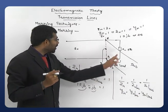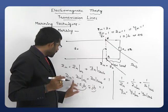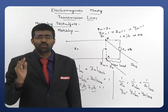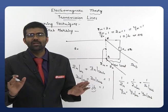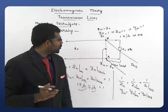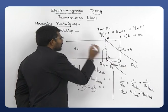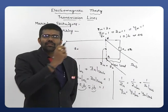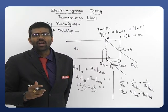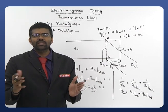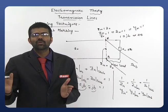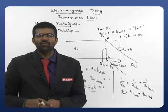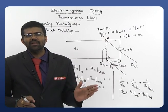However, this single-stub solution depends on the particular load ZL. If the load varies, you need to recalculate. For a generalized solution, we use multiple stubs — connecting stubs at different locations with different lengths so that any load can be matched. All these stubs are generalized so that any load connected will be matched with the main transmission line. These two — the lambda by 4 transformer and stub matching — are the two important matching techniques for connecting any load to a transmission line.